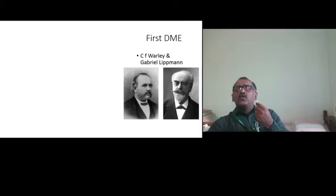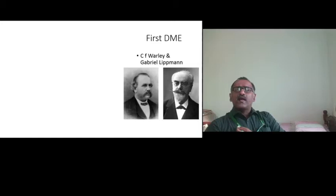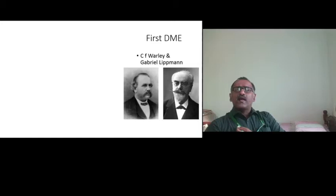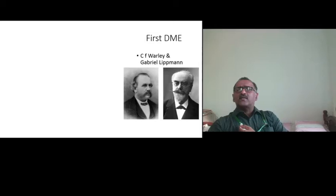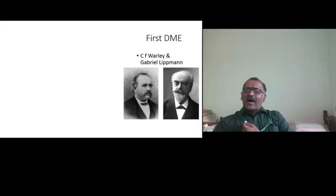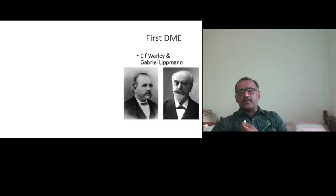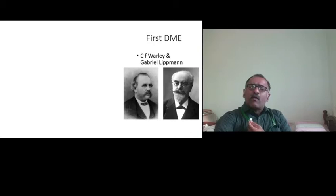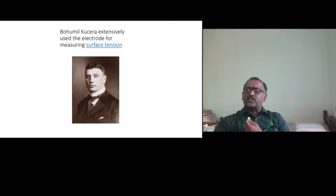Although Heyrovsky performed the polarographic experiment with the dropping mercury electrode, he was not the first to use it. It was C.F. Lippmann and Gabriel Lippmann from the Russian school, and also scientists from the Yugoslav school, who first used the dropping mercury electrode — though they used it to measure other properties. The idea of using liquid metal as an electrode was not new. Later, Gomill Kucera extensively used the electrode for measuring surface tension.